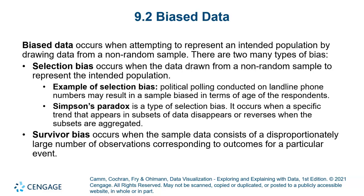In Simpson's Paradox, the results of the whole population are different from the results of individual subsets of the sample. The second type of bias data is called survivor bias, which is inspired by the World War Two aircraft study.